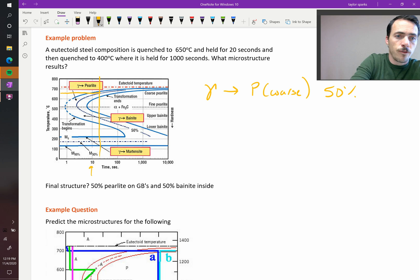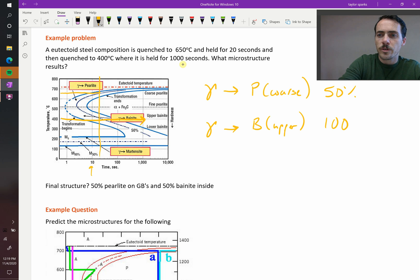And then it says we drop it down to 400, and we hold it for 1,000 seconds. So now we're going to go down here, we're going to go all the way up to 1,000. So what's happening down there? There, we've got austenite turning into upper bainite. And it goes 100%. However, what do we know about this? We've already consumed 50%, so this to start with, we only had 50% to start with, because we'd already converted 50% to coarse perlite. So we did a 100% conversion of 50%. So our final microstructure is going to be perlite 50%, and bainite 50%.